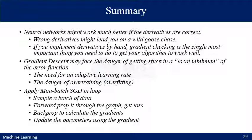Gradient descent can get stuck in local minima of the error function, so an adaptive learning rate is recommended — high at the start, gradually decreasing. There is also a danger of overfitting with a higher learning rate. In summary, apply mini-batch stochastic gradient descent: sample a small batch, forward propagate to get the loss, backward propagate to calculate gradients, then update parameters using those gradients.